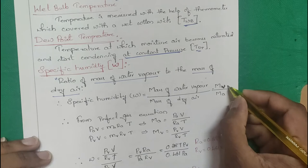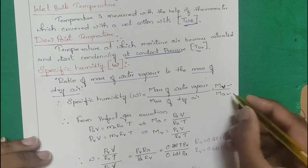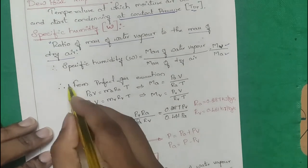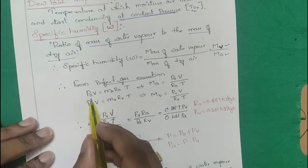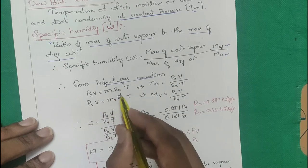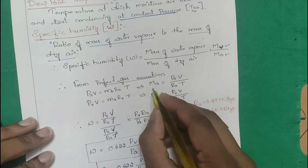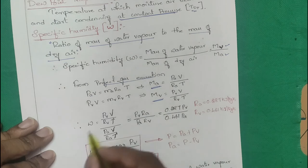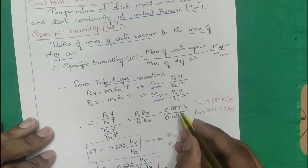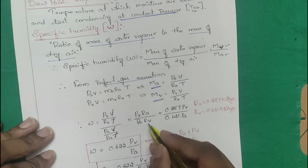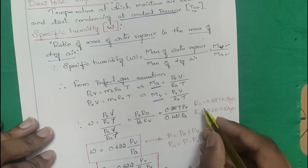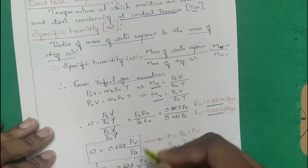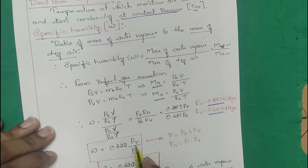Mass of water vapor is mv and mass of dry air is ma. To derive using the perfect gas equation: for dry air, PaVa = maRaT. We get the mass of air, and similarly the mass of vapor. Substituting into the specific humidity formula gives pv·Ra / (pa·Rv). With Ra = 0.287 and Rv = 0.461, we get W = 0.622 pv / pa.